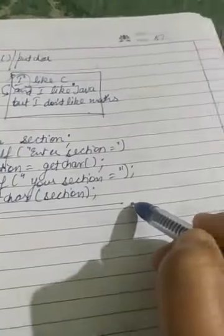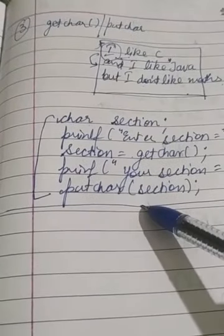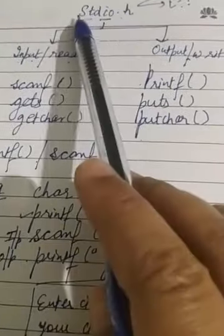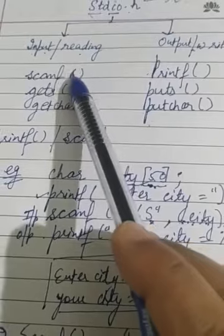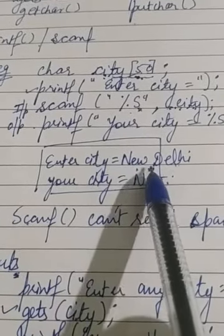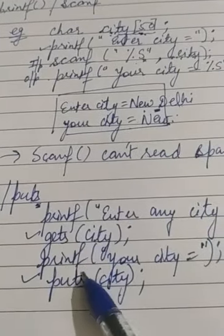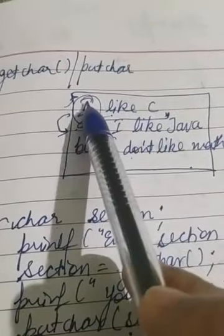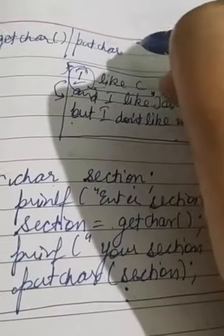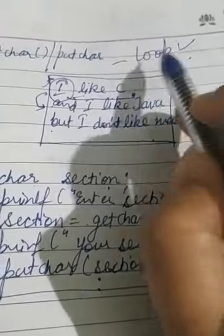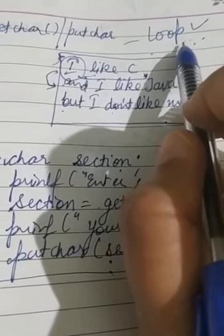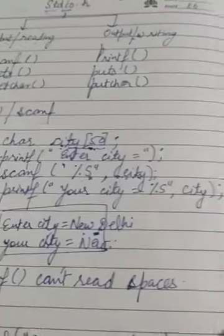This is all for today; the code is also in your notes. To summarize what we learned: printf/scanf cannot read spaces; gets/puts can read spaces but cannot read new lines; getchar/putchar, when used in a loop, can read strings of any size including spaces and new lines — it is the most powerful but a bit more complex to use. Study the question answers carefully.